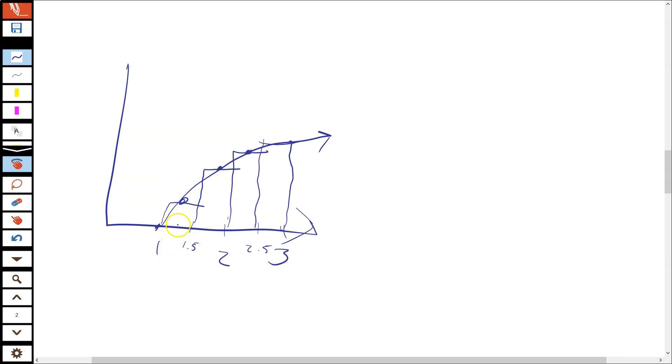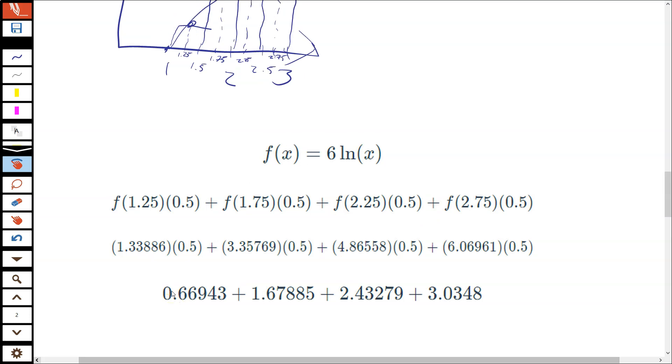But we want to figure out these midpoints. So this midpoint is going to be 1.25. This midpoint is going to be 1.75. This midpoint is going to be 2.25. This midpoint is going to be 2.75. So those are the x's we're going to plug into our function to find the height. So our goal here is to find the height of these rectangles. Our whole goal is to find the area of these rectangles to approximate the area under the curve. So let's see what my solution would look like.